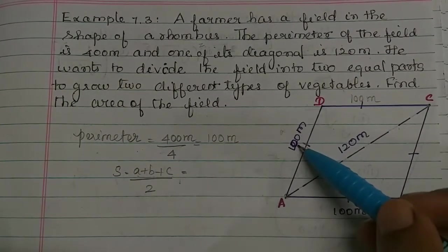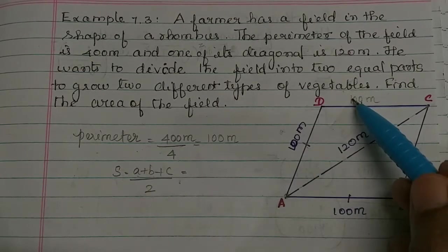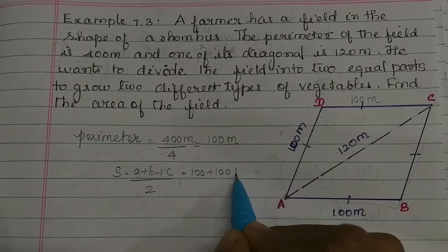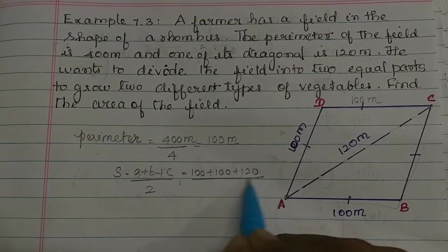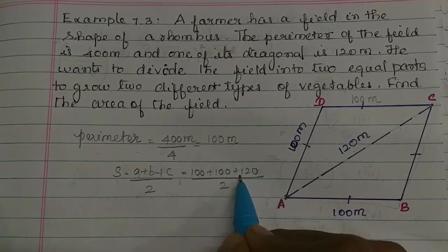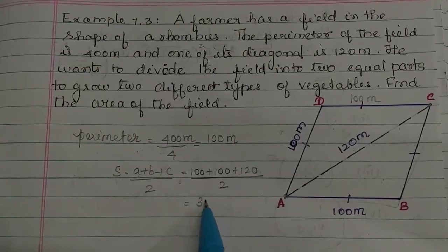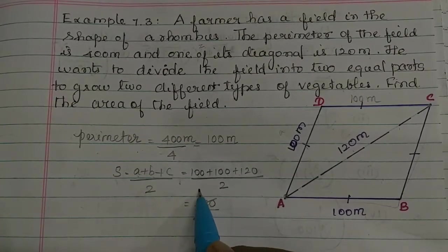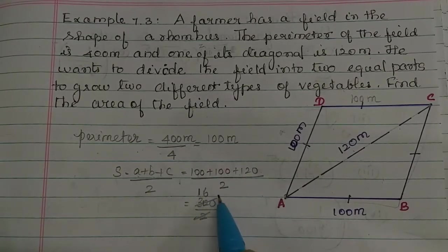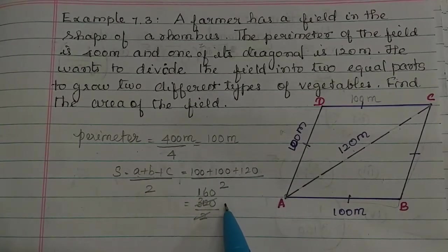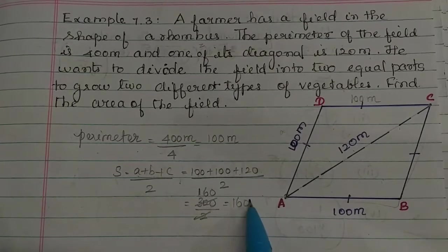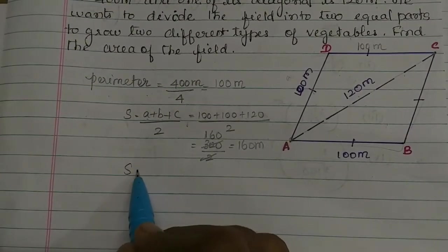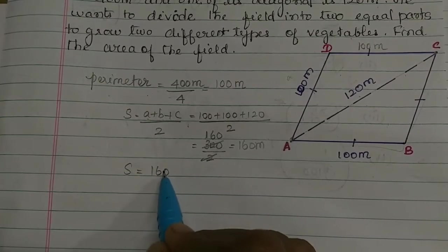So a, b, c are the three sides. The three sides of our triangle are 100, 100, and 120. So s equals (100 plus 100 plus 120) divided by 2, which is 320 divided by 2, which equals 160 meters. So s, the half-perimeter, is 160 meters.